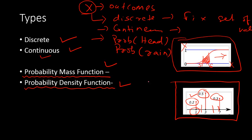That's the basic difference between the probability mass function and the probability density function. I will not go into the mathematical details here, but we will see the detailed mathematics of these two types of functions when we learn each of the discrete and continuous probability distributions. Thank you.